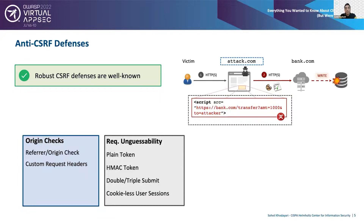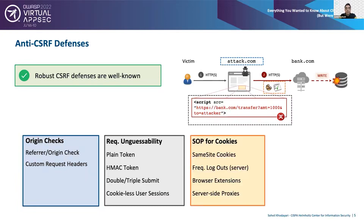The third category addresses the ambient authority problem — the automatic inclusion of HTTP cookies in cross-site request contexts — by limiting cookies to a first-party context. This can be done via browser-built-in solutions like the recently proposed same-site cookies policies, or third-party solutions like custom browser extensions and HTTP proxies, the most famous of which are RequestRodeo, BeEF, and CSfire.